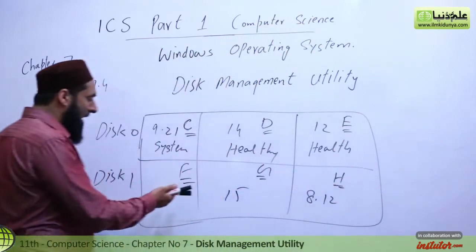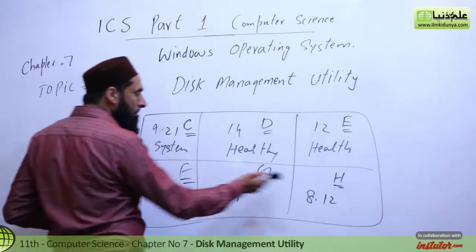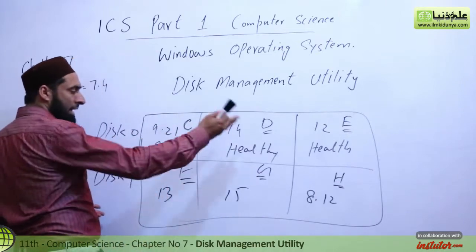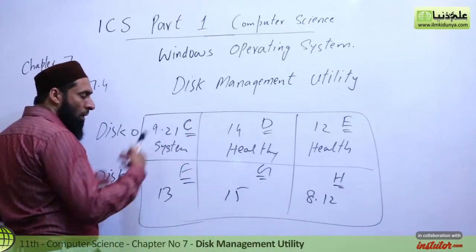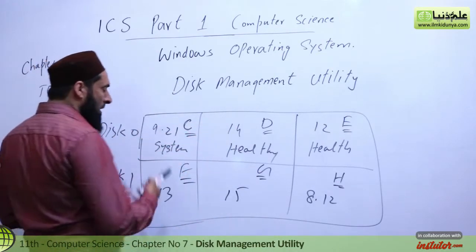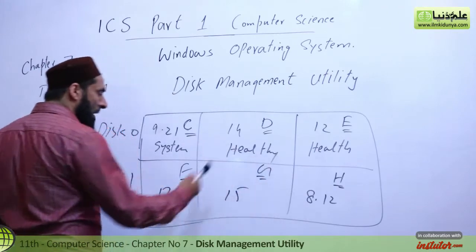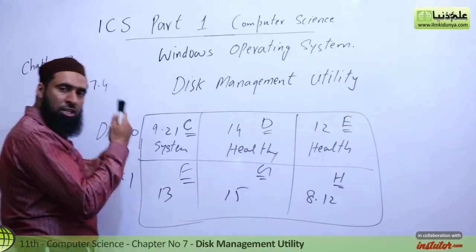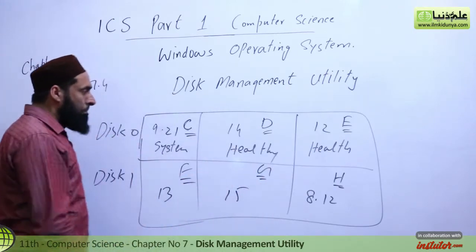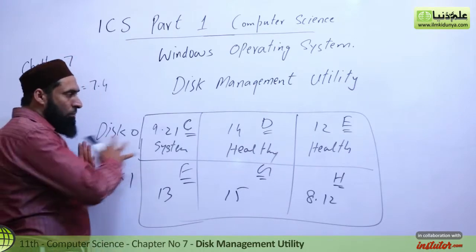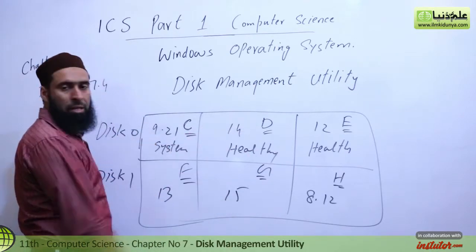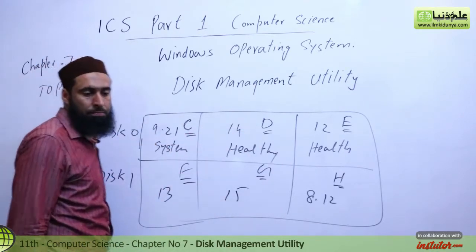We are working on the main drives. This is our C Drive, D Drive, F, G — all these are the drive names. This can be a hard disk, CD-ROM, or DVD. This is a physical graphical view. We have seen how the hard disk looks.